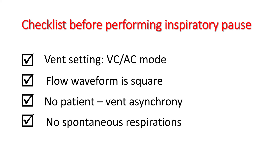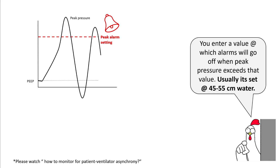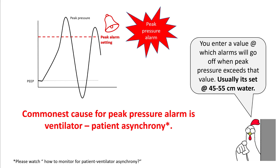Checklist before performing an inspiratory pause: make sure you are in VC-AC mode, the waveform is square, there is no patient-ventilator asynchrony, and there are no spontaneous respirations. On every machine there is a peak alarm setting that alarms when peak pressure rises above a certain level — usually set between 45 to 55 cmH₂O. This is important for patient safety, but the most common reason the alarm triggers is patient-ventilator asynchrony due to agitation.